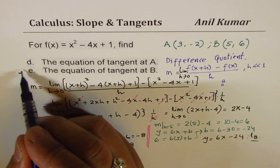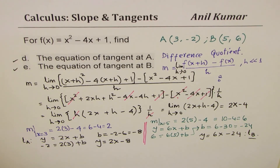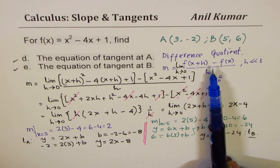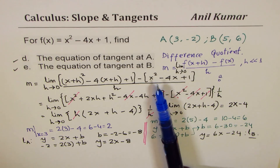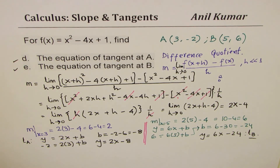So we're done with all parts. I hope the steps are absolutely clear and you understand how the difference quotient method in general form helps calculate the slope of tangent lines at different points easily. Feel free to share and subscribe to my videos if you like. Thank you and all the best.